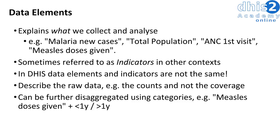The next aspect we will explain are the data elements. Data elements explain what we collect and analyze. As an example, we can collect information on the number of new malaria cases, the total population, the number of measles doses given, and in our first example we used ANC first visit. Sometimes data elements are referred to as indicators in other contexts; however, in DHIS2, data elements and indicators are not the same. Data elements describe the raw data — this is what we are collecting on our forms. Indicators can refer to calculated data values, which we will cover in analysis sessions. For now, we are focusing on data elements, which collect this raw data.